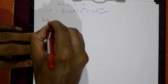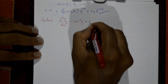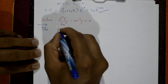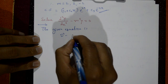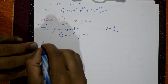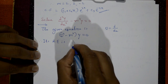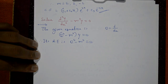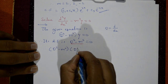Next example: solve d⁴y/dx⁴ minus m⁴·y equal to 0. Find the complementary function. The given equation is (d⁴ minus m⁴)·y equal to 0, where d stands for d/dx. The auxiliary equation is d⁴ minus m⁴ equal to 0. We can write this as (d² minus m²)(d² plus m²) equal to 0, using the a²−b² formula.